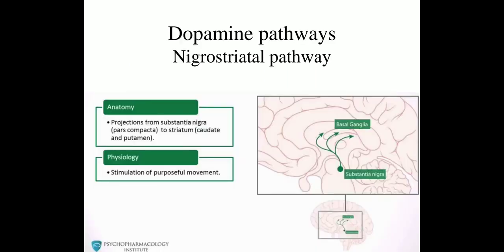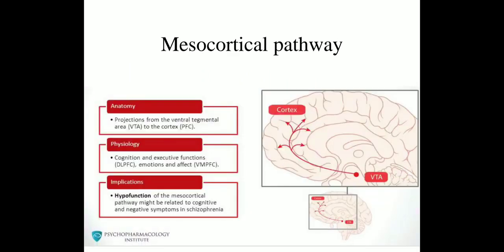Now we will see the dopamine pathways, as dopamine release is fluctuated in schizophrenia. First is the nigrostriatal pathway, in which it is projected from the substantia nigra to the striatum. It stimulates purposeful movement. Second is the mesocortical pathway, projected from the VTA, that is the ventral tegmental area, to the cortex. It is responsible for cognition, executive function, and emotions.